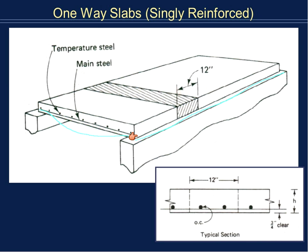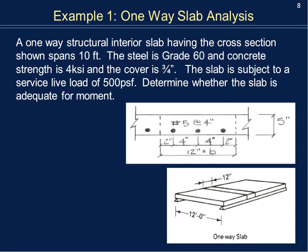Example number one: a one-way structural interior slab having the cross-section shown spans 10 feet. The steel is grade 60, the concrete strength is 4 KSI, and the cover is three-quarters inch for an interior slab. The slab is subject to a service live load of 500 pounds per square foot. Determine whether the slab is adequate for moment. Our first step is to calculate the applied moment, which requires calculating distributed loads.